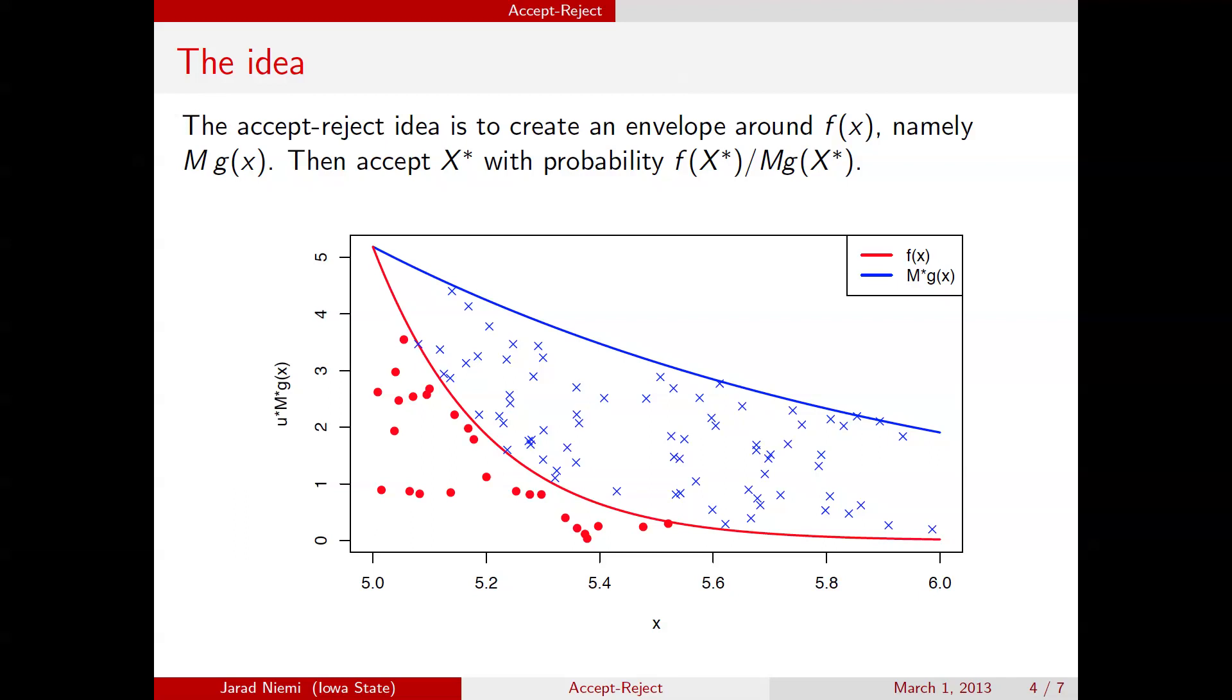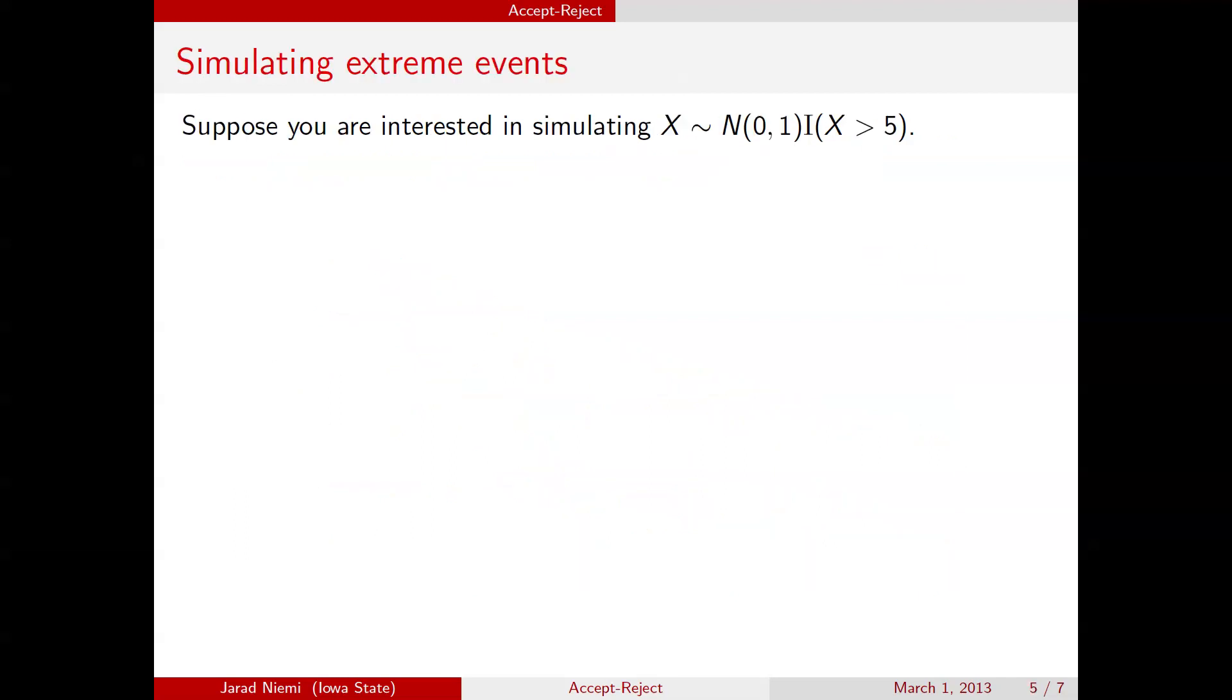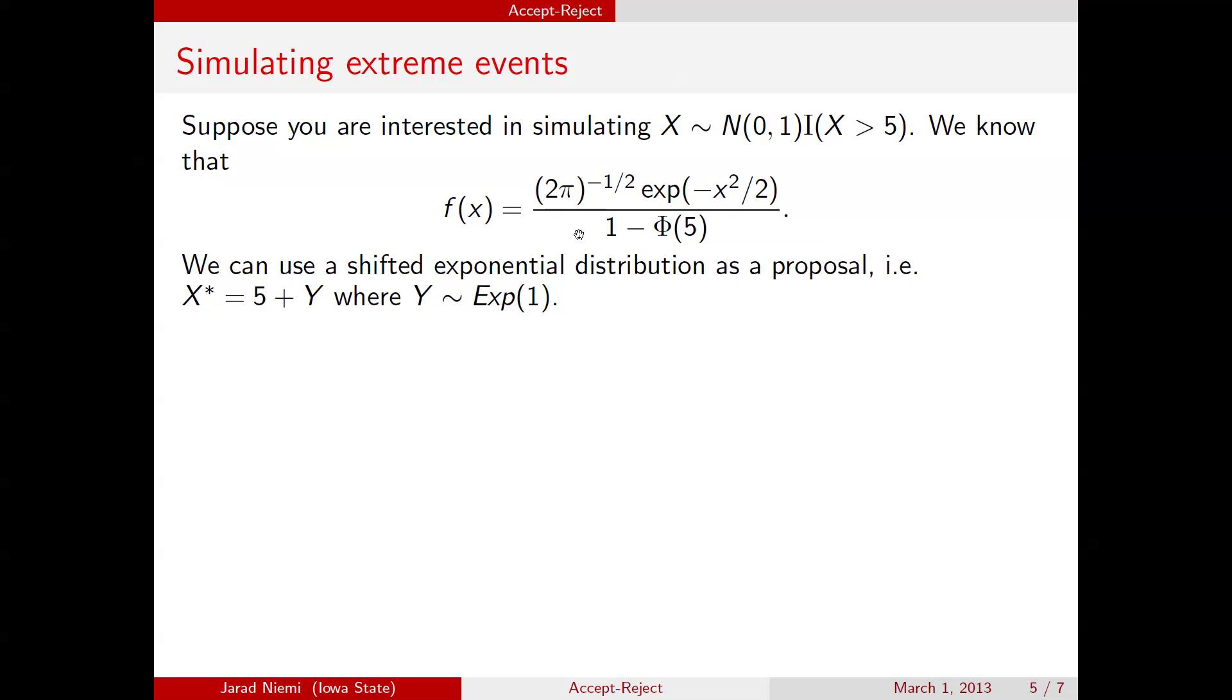So here's the example on which this picture is based. The idea here is that we're trying to sample a normal random variable, a standard normal that's truncated to be greater than 5. We can find its probability density function. It's just a standard normal, renormalized, so that it actually integrates to 1.